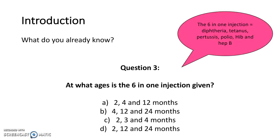The last question is: at what ages is the 6-in-1 injection given? The 6-in-1 injection covers diphtheria, tetanus, pertussis, polio, haemophilus influenzae type B and hepatitis B. The answer to question 3 is option C: 2, 3 and 4 months old.